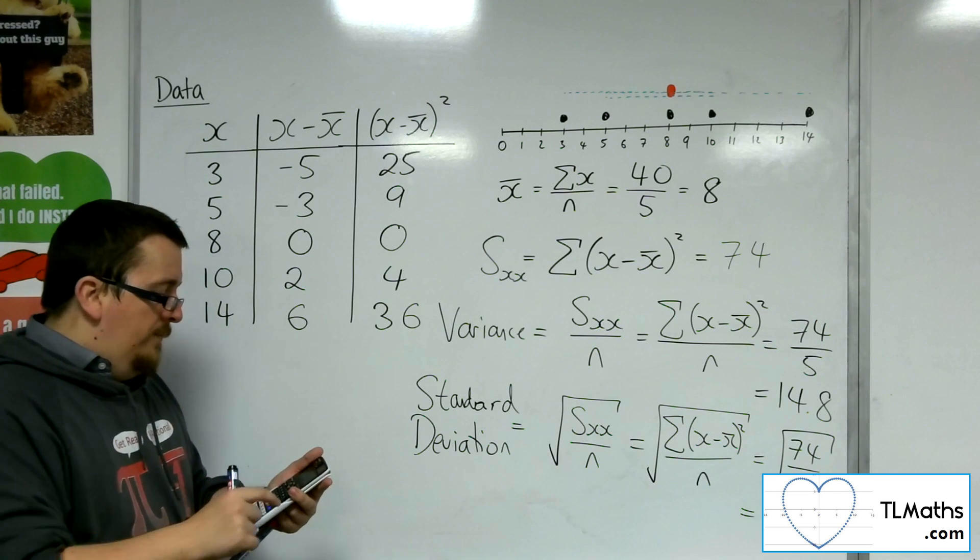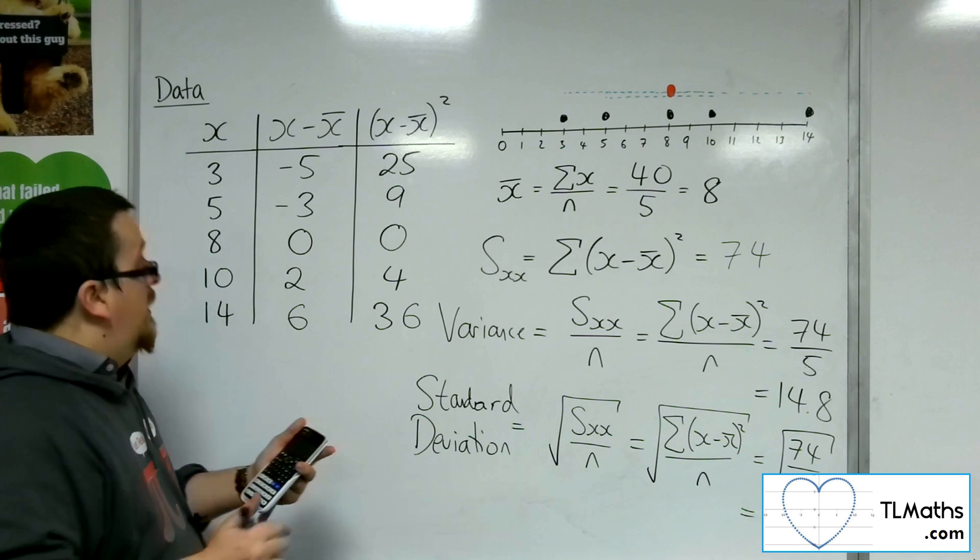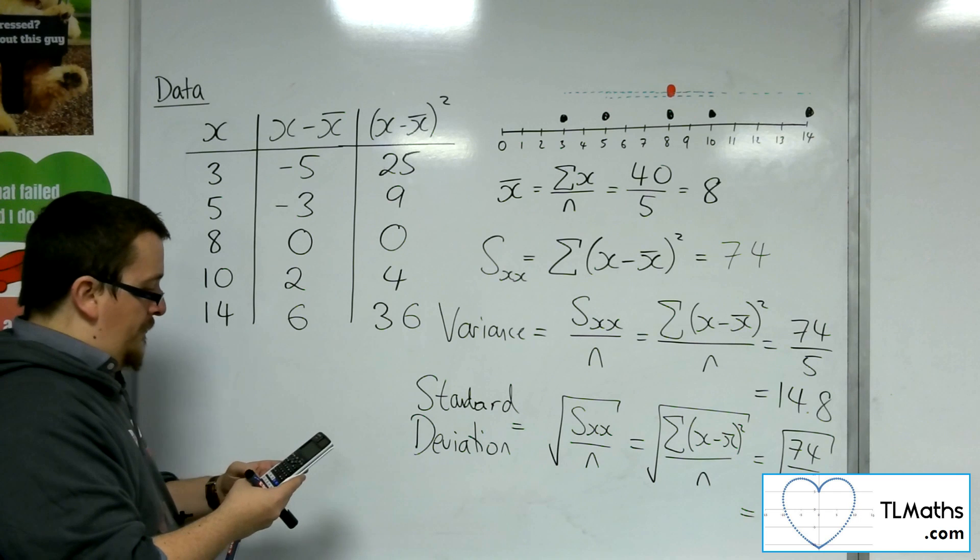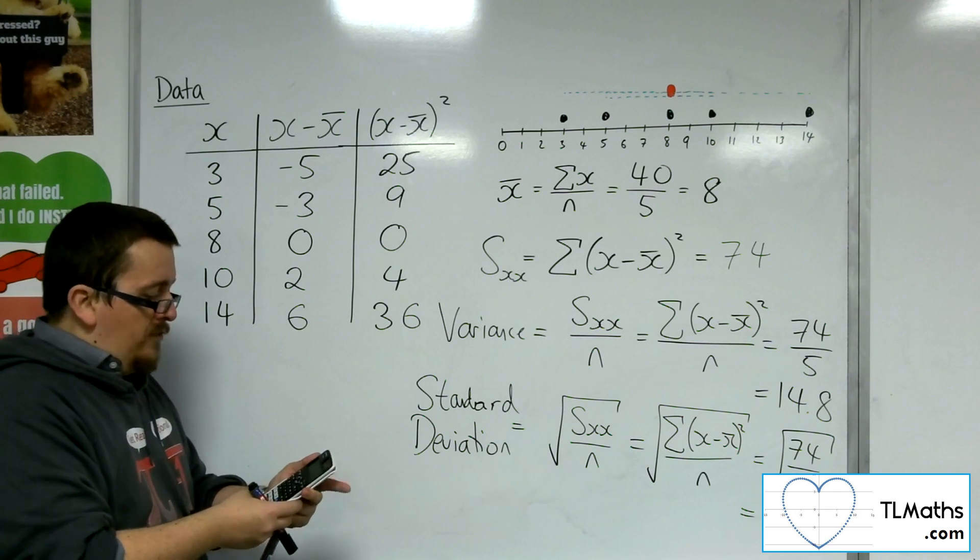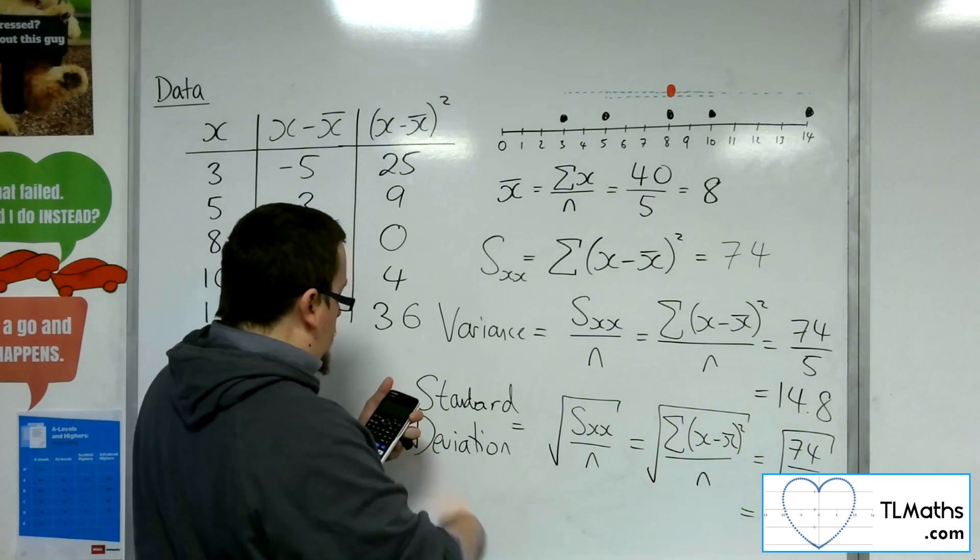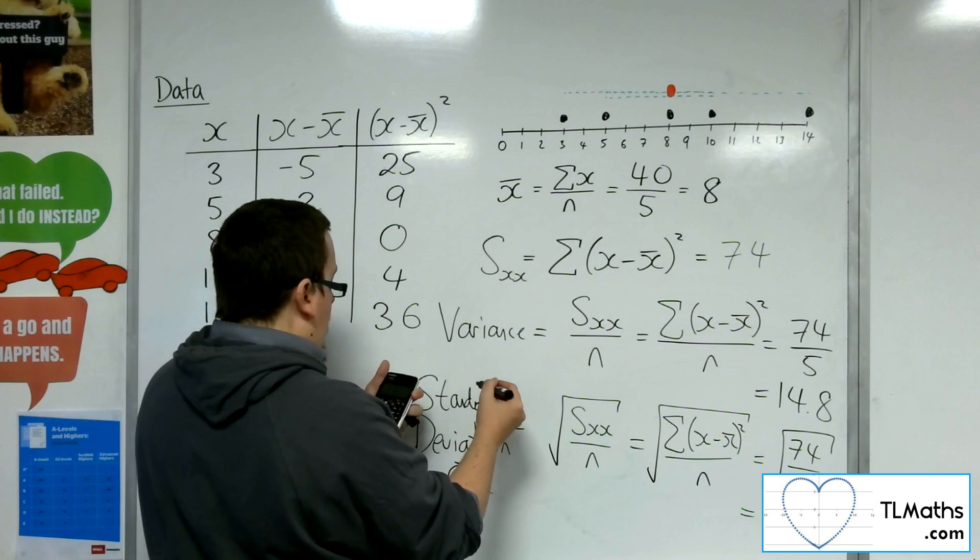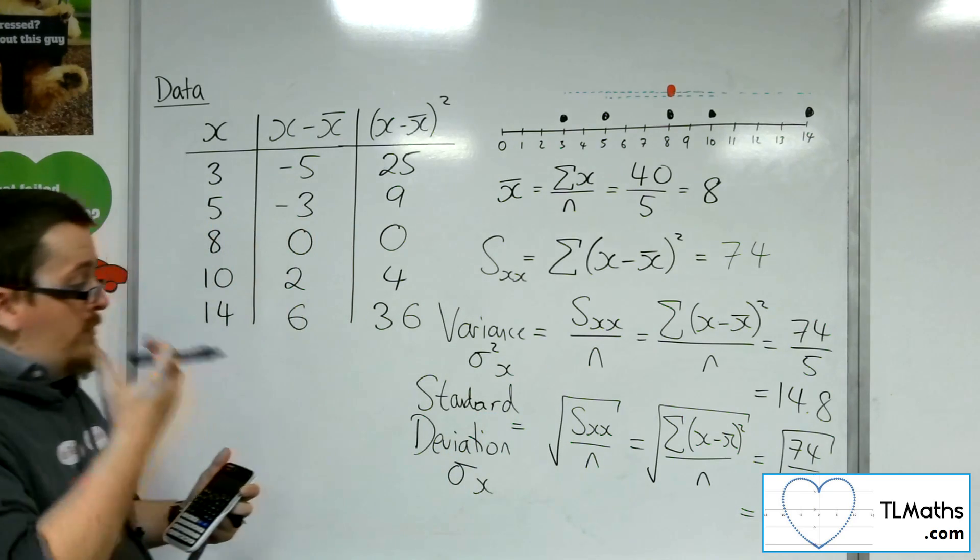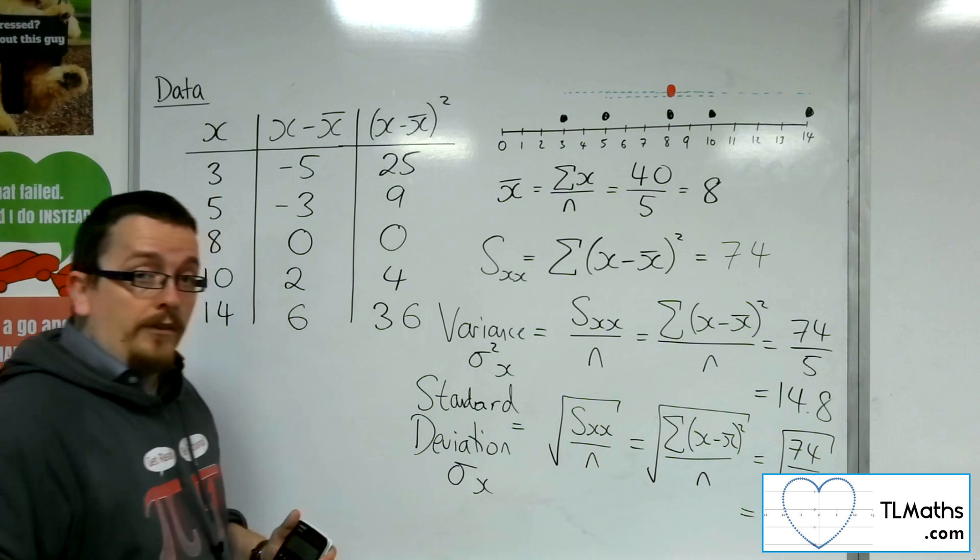So how could you do this on your calculator? So what you need to do is you need to go to the menu, and then number 6, and then one variable. We need to type in our data. So 3, 5, 8, 10, and 14. Then go to option number 3 for one variable calc. And what you're looking for is the σx. That's the standard deviation. And you'll find the σ²x as the variance. So we often write the standard deviation as just σ without the x.